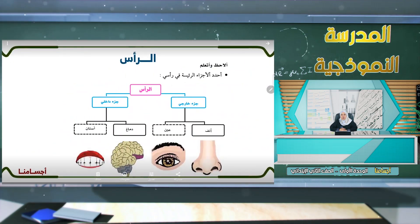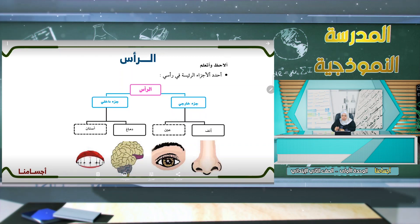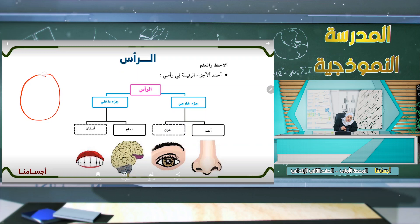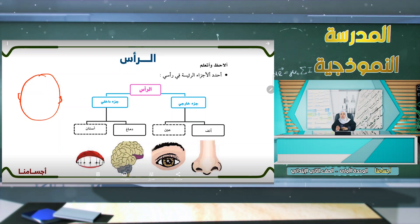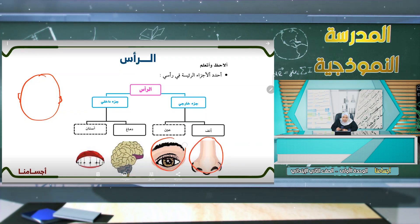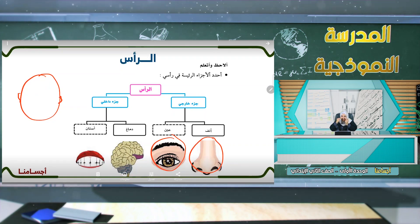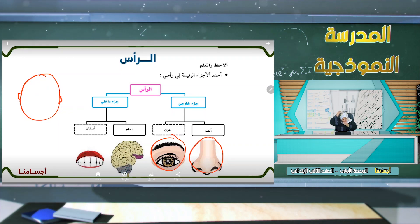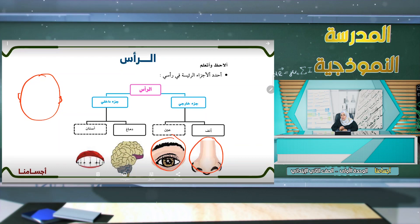سوف نتكلم الآن عن الرأس ونرى في هذه الشريحة الأجزاء الرئيسية للرأس. هناك أجزاء خارجية مثل أنف وعين، وهناك أجزاء داخلية. ماذا يوجد داخل الرأس؟ دماغ.